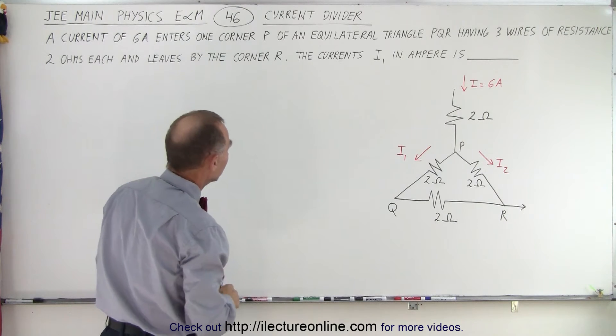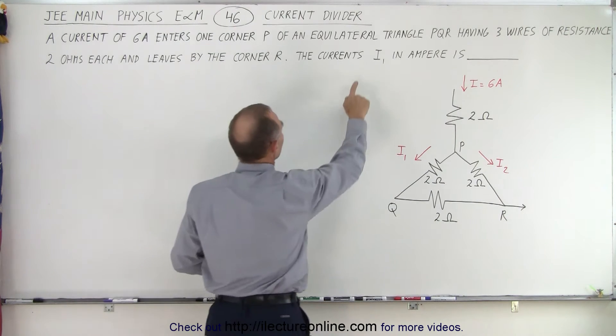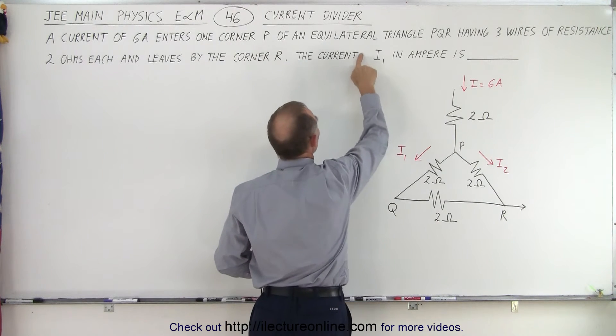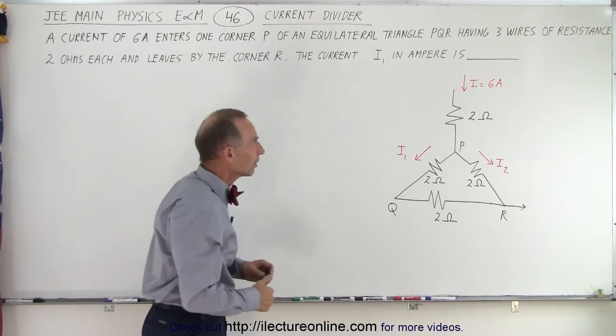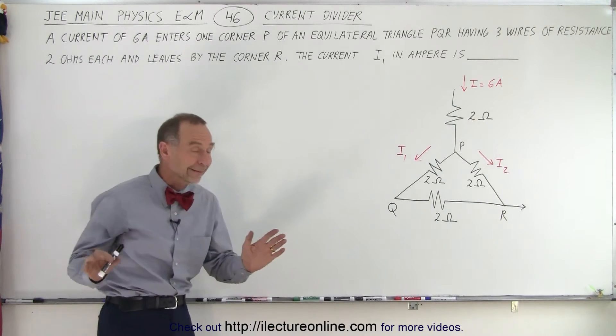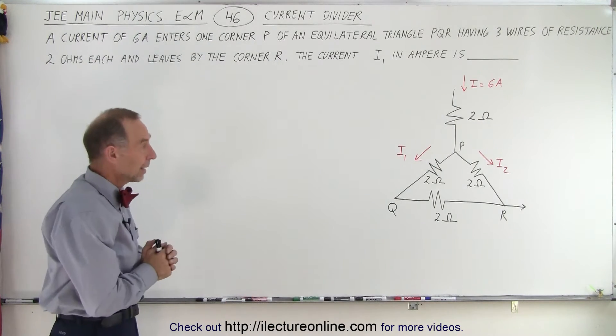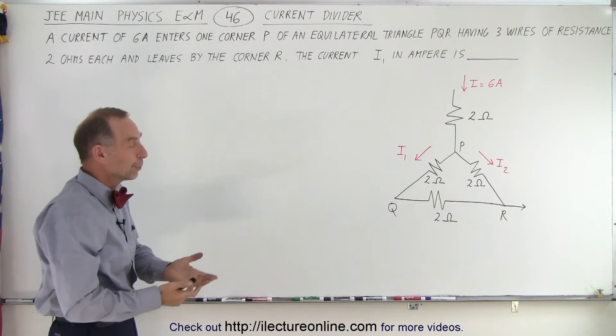Each of the wires has a resistance of 2 ohms each, and the current leaves by the corner R. The current I1 in amperes is what we need to find.